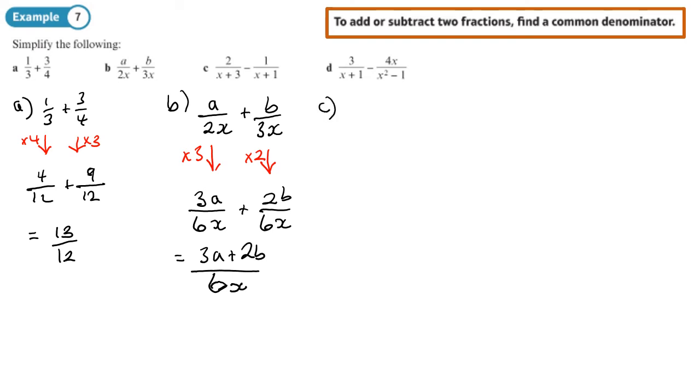On C, so I've got 2 over X plus 3 minus 1 over X plus 1. No common factors in the denominators. So the first one I'll need to times by X plus 1. And the second fraction I'll need to multiply the top and the bottom by X plus 3. Right, so if I do that, I will get 2 times (X plus 1) at the top and then X plus 3 times X plus 1.